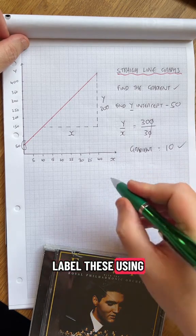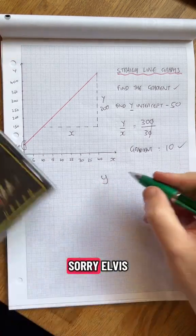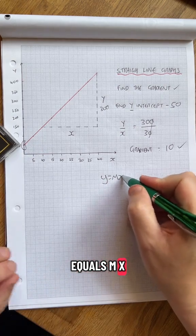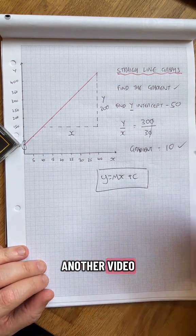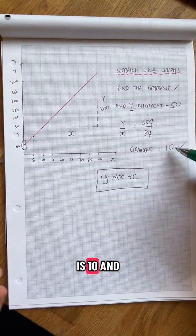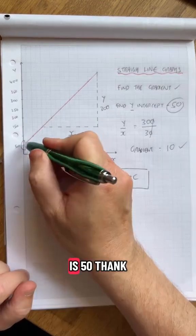Now we can label these using this law. Y equals mx plus c. We'll get onto that in another video. But the gradient is 10 and the y-intercept is 50. Thank you very much.